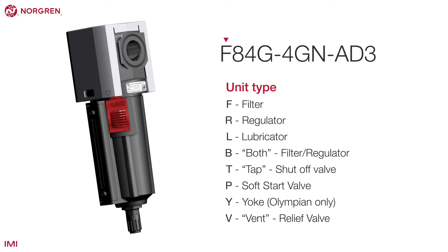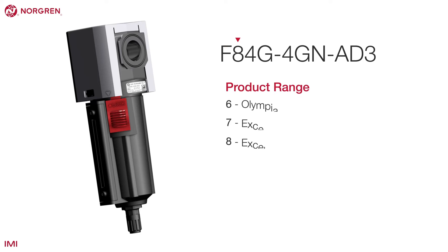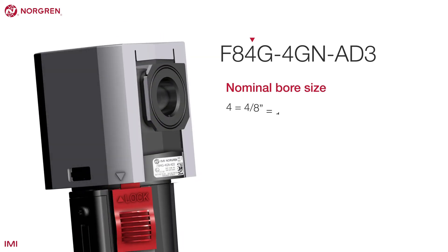The second digit represents the product range — in this case, Exelon Plus. The third digit gives us the nominal bore size, which, as we mentioned, relates to flow. This is measured in eighths of an inch.